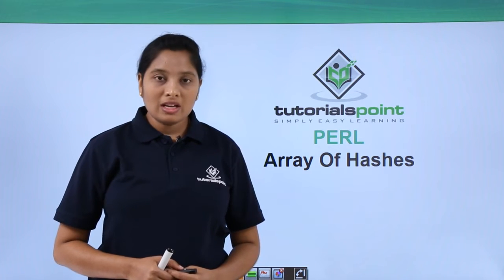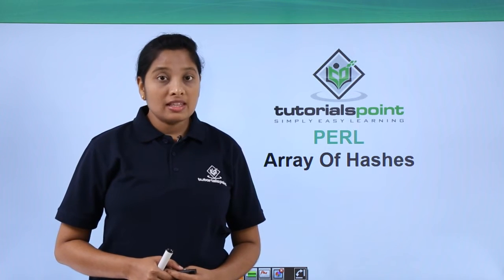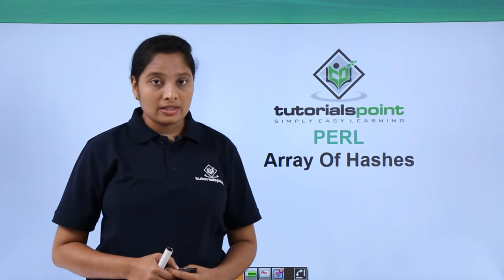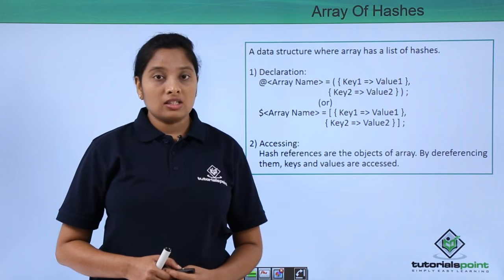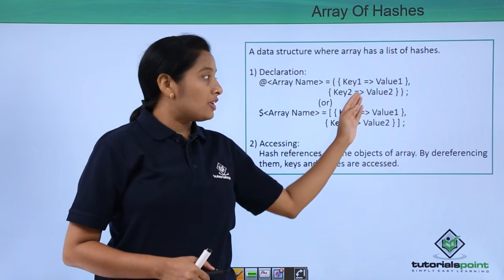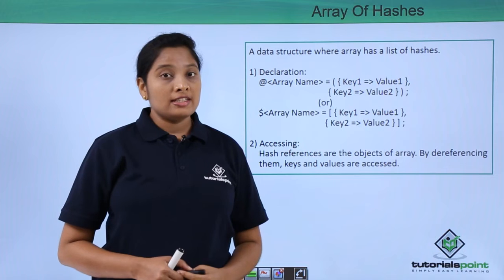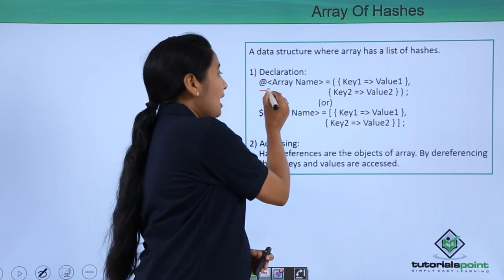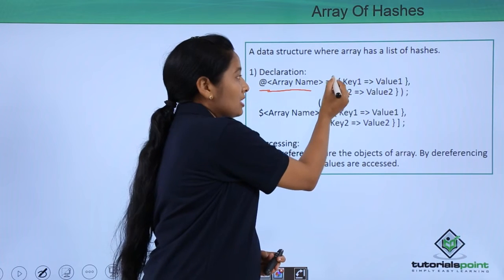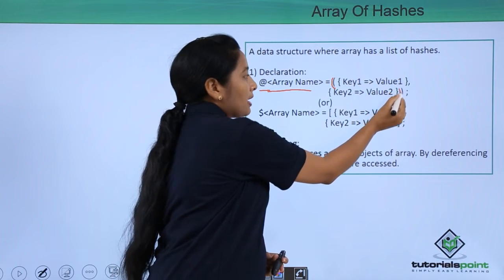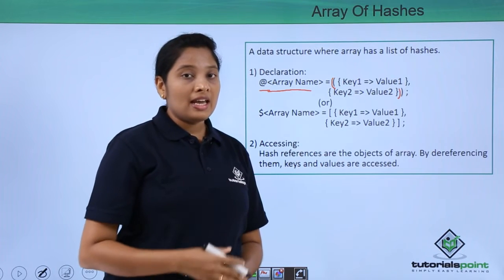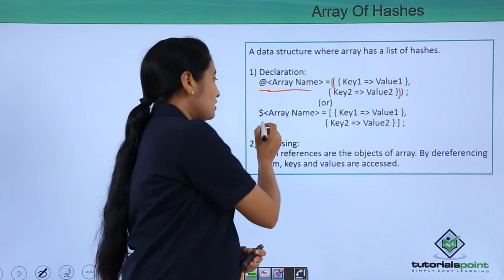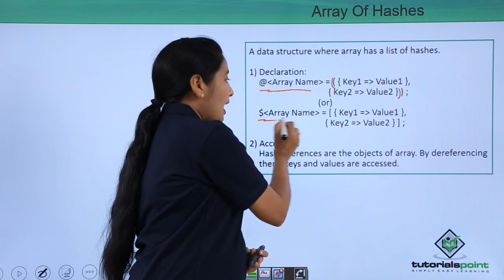Welcome to Tutorials Point. In this video, let us discuss the third data structure called array of hashes. This data structure holds a list of hash references. You can create this in two ways: using a simple array with the '@' symbol, enclosing all hash references in normal brackets, or using a reference with a '$' symbol, enclosing all hash references in square brackets.